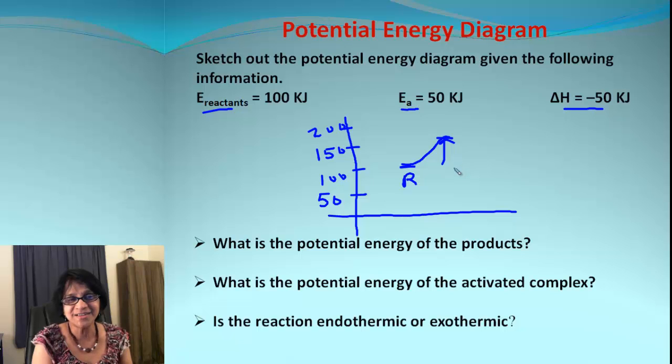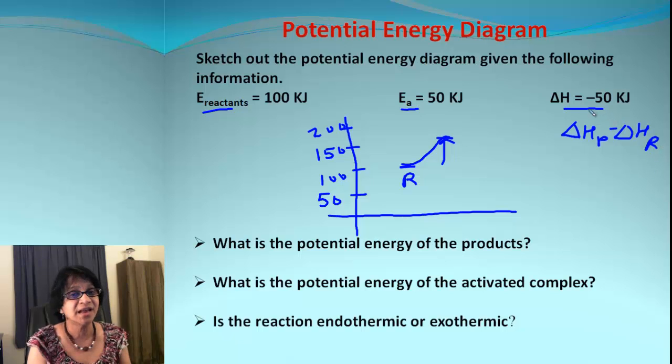Then delta H is given as negative 50. What is delta H? That is equal to delta H for products minus delta H for reactants. If it's negative, that means it's an exothermic reaction, and that means the product must be lower than reactants. And how much lower? 50 kilojoules lower.